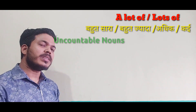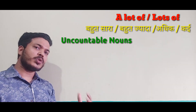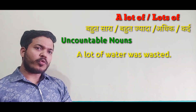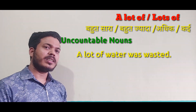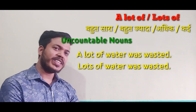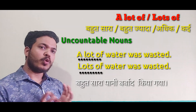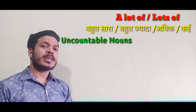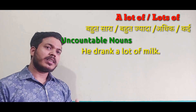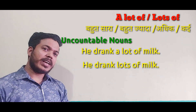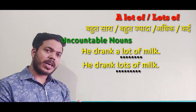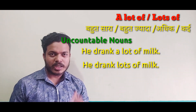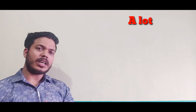Now let's look at the use of 'a lot of' and 'lots of' with uncountable nouns. 'A lot of water was wasted' or 'lots of water was wasted' — here 'water' is an uncountable noun. Next example: 'He drank a lot of milk' or 'he drank lots of milk' — here 'milk' is an uncountable noun. Is that understood?